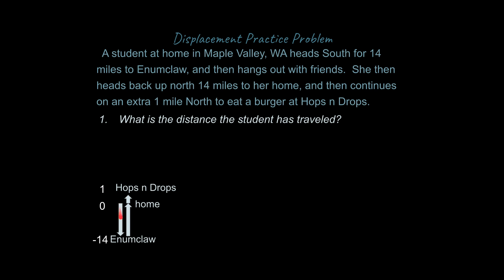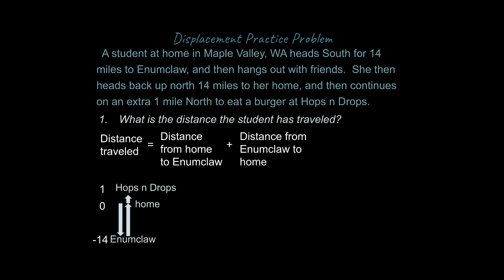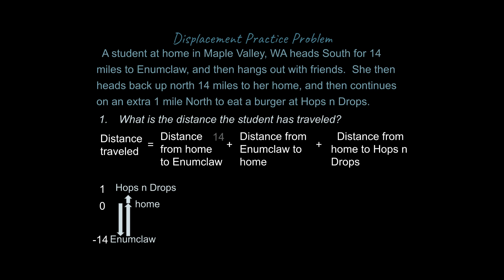She starts in Maple Valley, goes down to Enumclaw, then goes north to her home, and continues one more mile. The distance traveled equals the distance from home to Enumclaw, plus Enumclaw back to home, plus home to Hops and Drops: that's 14 plus 14 plus 1, giving us 29 miles. Another way to think about it is the total miles she put on her odometer that day.